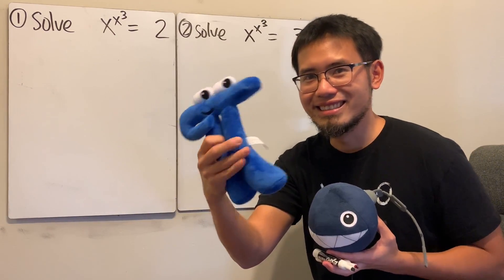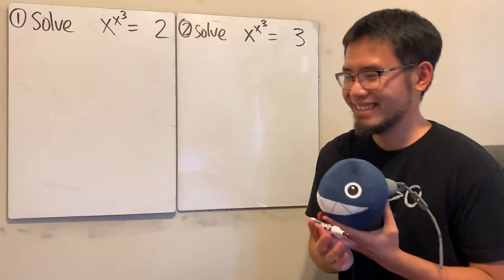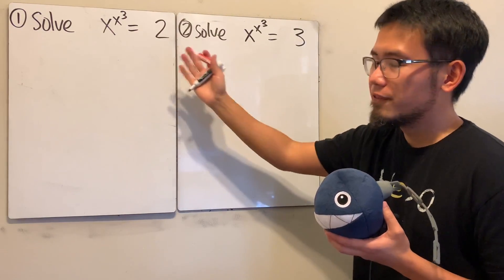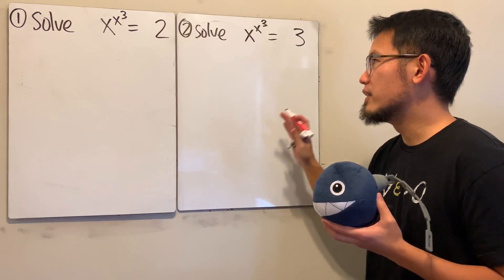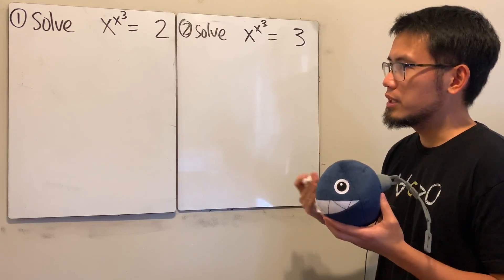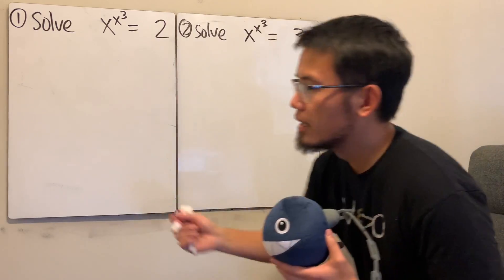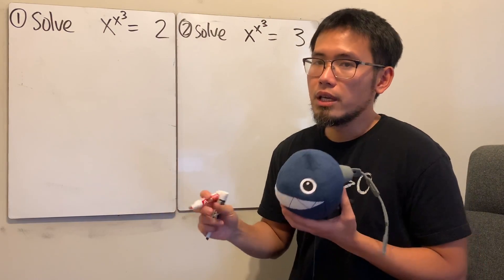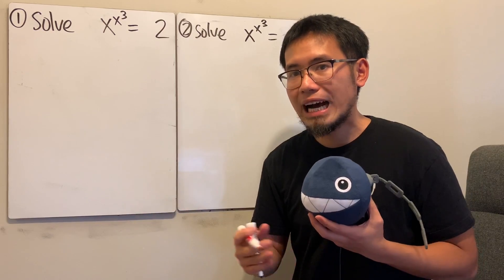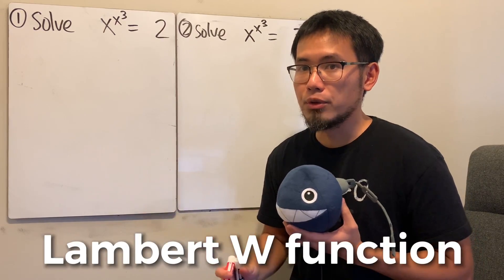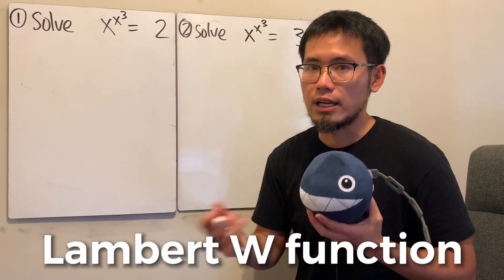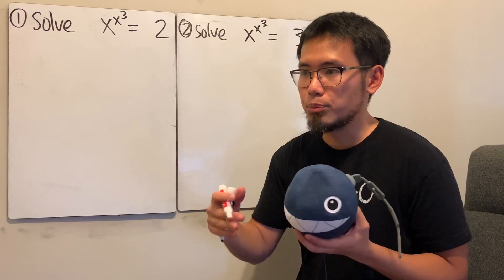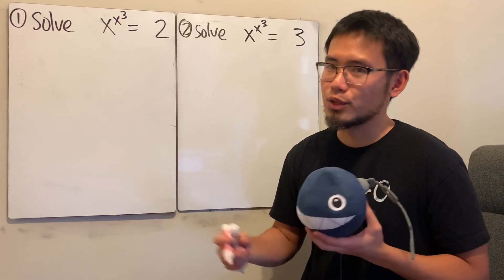Randy is watching us, right? Okay, so let's do the first one first, even though the second one is actually easier because the answer is nicer. Anyway, in order to do this one we actually have to use the Lambert W function along with the natural log. The W function is called the product log as well.